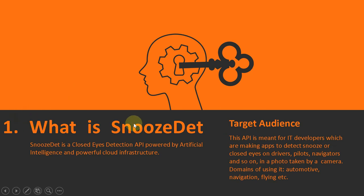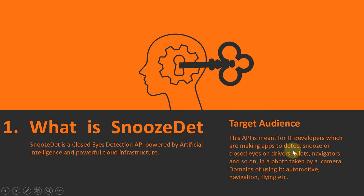What is Snooze Debt? Snooze Debt is a closed-eyes detection API powered by artificial intelligence and powerful cloud infrastructure. This API is meant for IT developers which are making apps to detect snooze or closed-eyes on drivers, pilots, navigators and so on in a photo taken by a camera. Domains of use include automotive, navigation, flying, and so on.